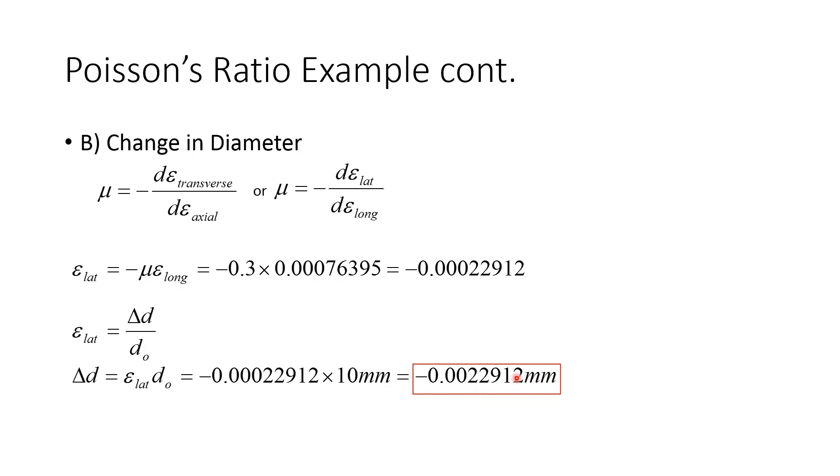Alright, and notice this negative sign here. So this negative sign is important. What this negative sign indicates is that there's being a reduction in the diameter, which makes sense. If you think about something stretching in one direction, it needs to shrink in the lateral direction. So if it's increasing longitudinally, it will have to shrink laterally to keep volume constant. So make sure that you do not forget this negative sign, and that you carry it through on your calculations.